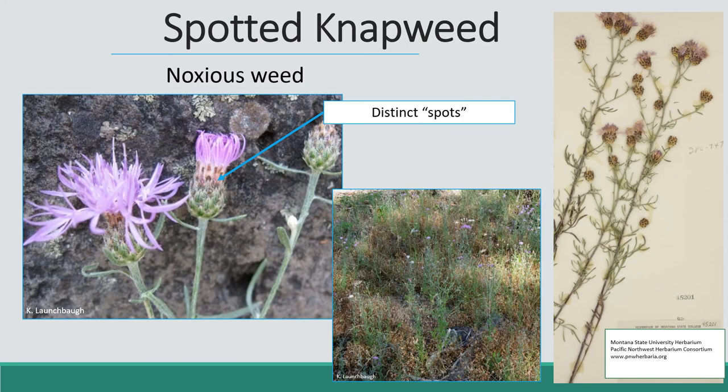Here's a closer look at those spots — the bracts that hold the composite flower just get dark towards the tips, giving the plant a spotted look. The middle picture shows how it just spreads out over the soil. It has rhizomes, so if you cut off the top it will send new stems out from buds in the roots, just like leafy spurge. The main identification characteristics are: purple disc flowers, spots on the bracts underneath those flowers, and highly, deeply lobed leaves.